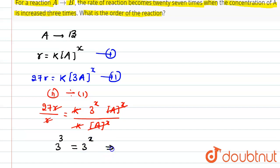the same. So x is equal to 3. What will be the order of this reaction? Actually, this x is the order of the reaction, so the order of this reaction will be equal to 3. I hope you understand this concept. Thank you.